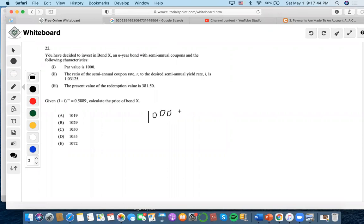Now, we need to find the coupon rate. So this is the ratio of the semiannual coupon rate R to the desired yield rate I is 1.03125, which means that the coupon rate R would be 1.03125i to the present value of semiannual years, so 2n.